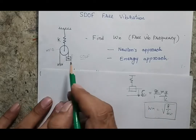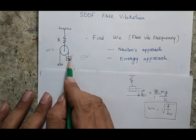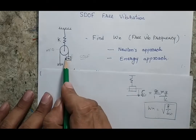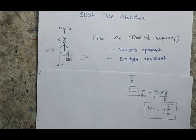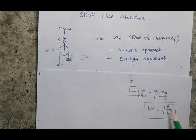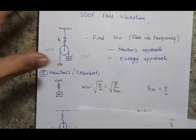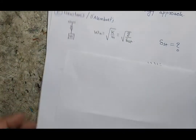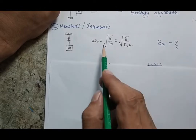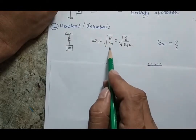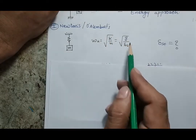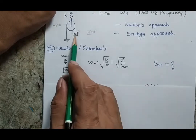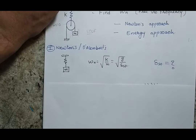We know that if in this system also I know the static deflection, or the deflection of my mass when I am going to add the mass, I will be able to get the natural frequency. So when I am going to apply Newton's law, I know that for a simple system the natural frequency will be the square root of K by M, or also the square root of G by delta-static. So if I am able to get the static deflection of this body, I will be able to get the natural frequency.